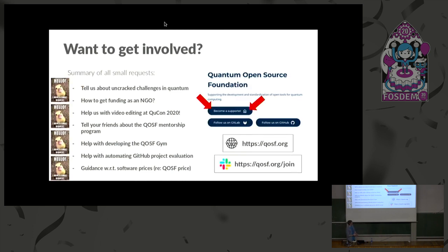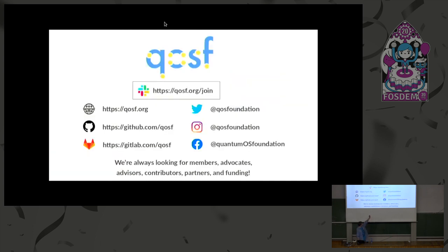If you want to get involved, there's a 'become a supporter' tab on the website. Basically that means you'll be put on a mailing list where we send out information about events like FOSDEM, hackathons, or anything related to the Quantum Open Source Foundation. Join our Slack channel, check out our GitHub and GitLab profile, and follow us on social media. That's it from me, thank you.